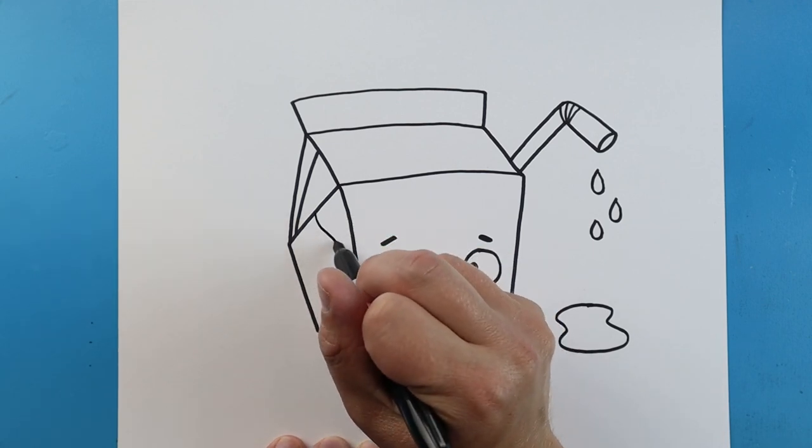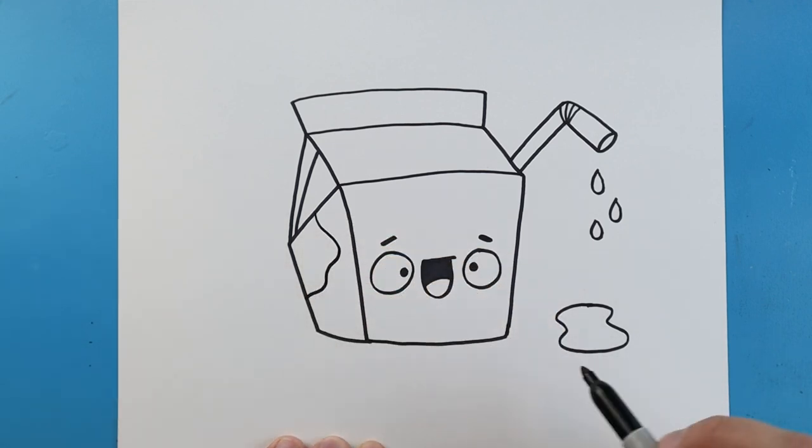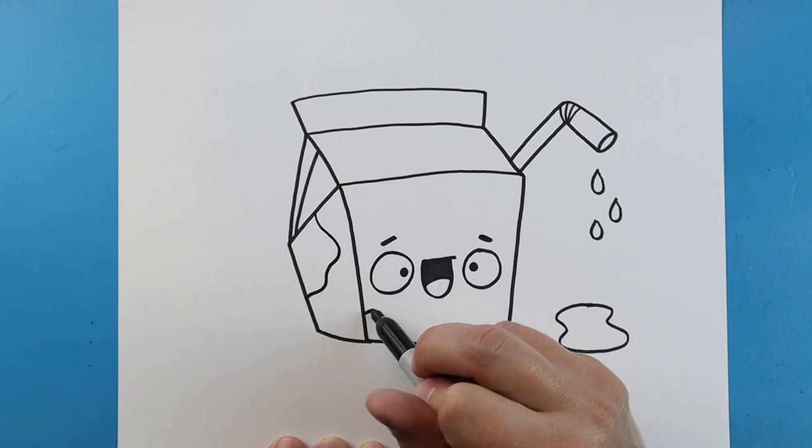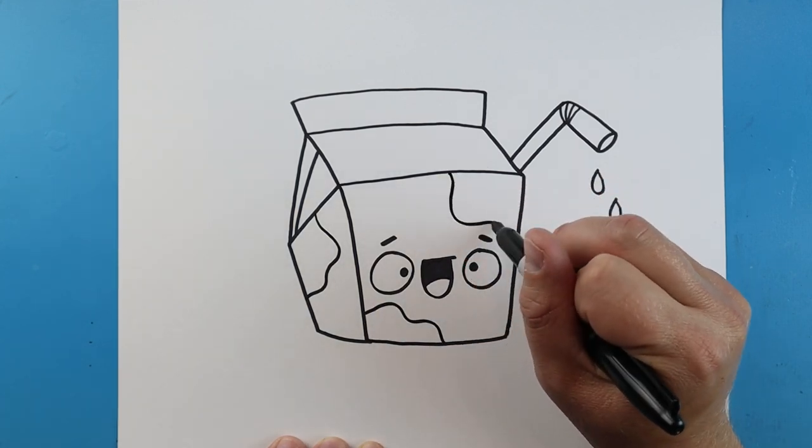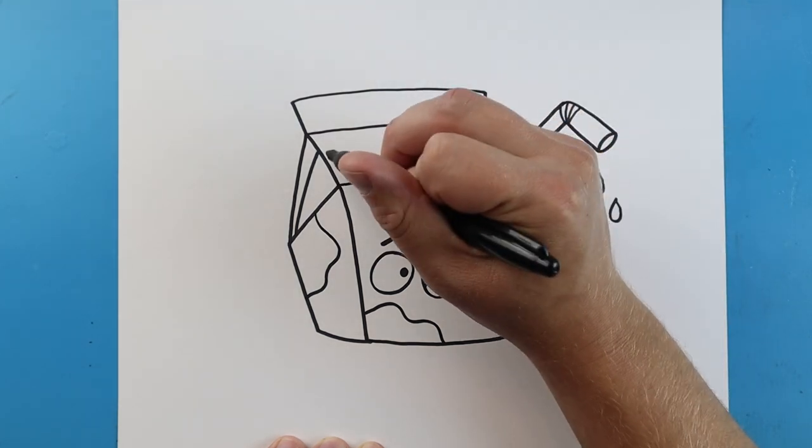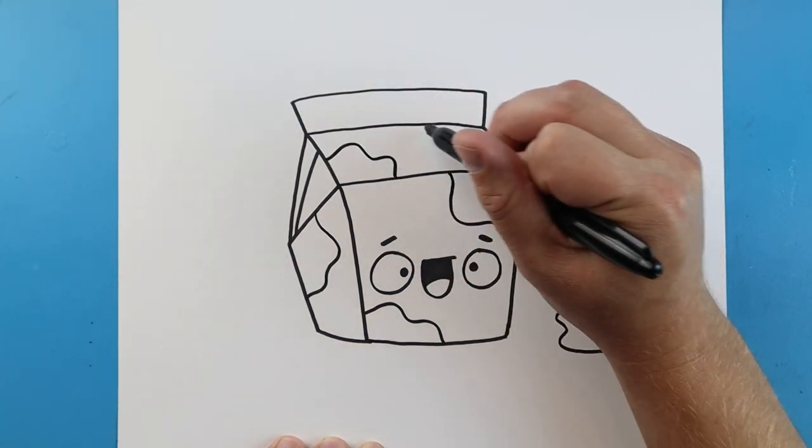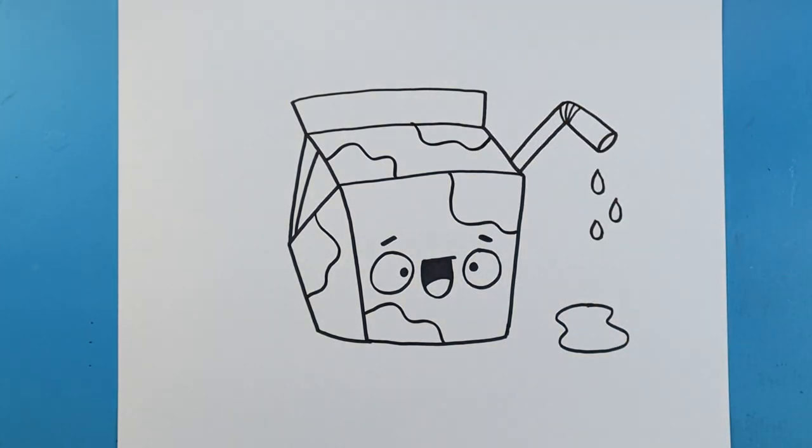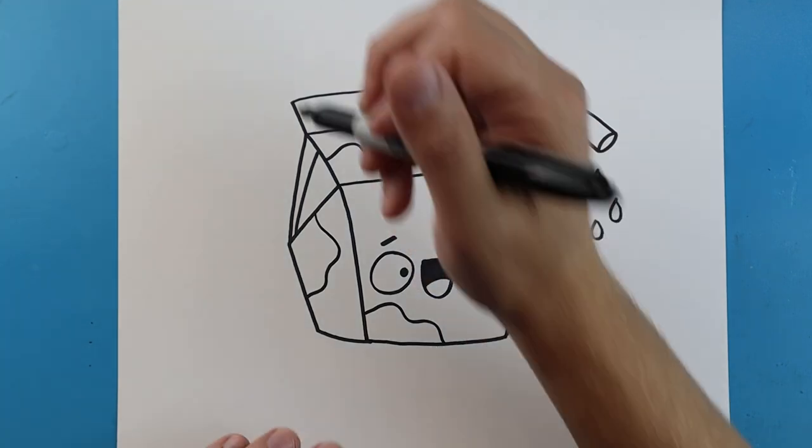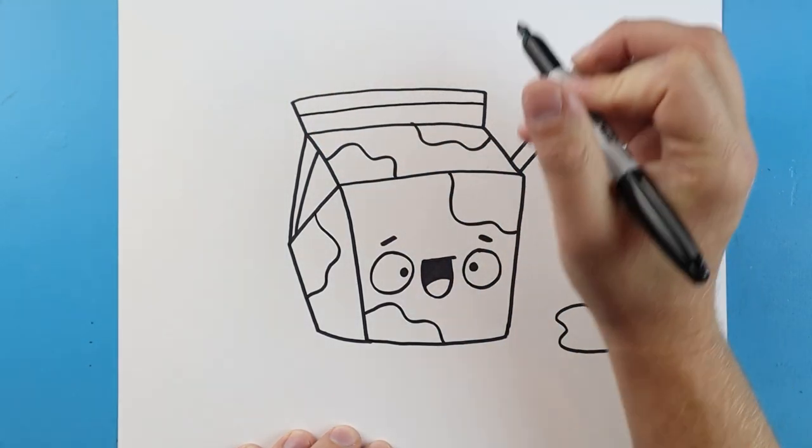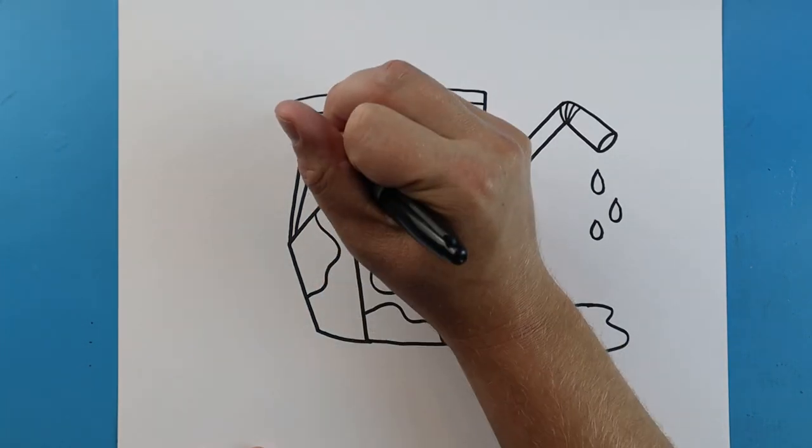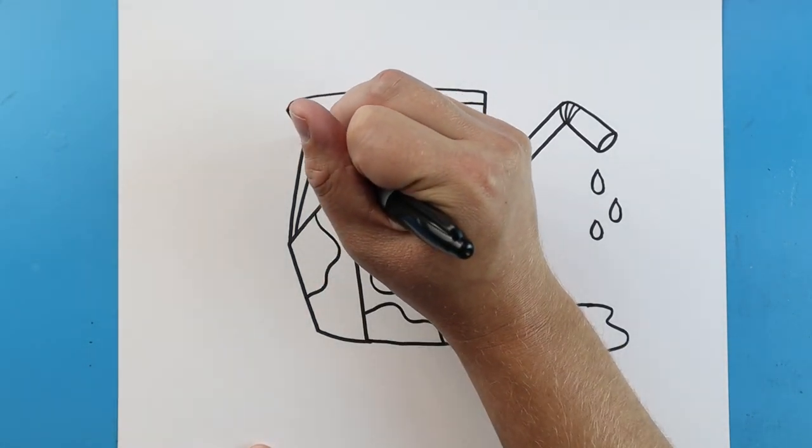Now on top, to finish this off, make some wavy lines for some spots on our carton of milk. Put some big wavy lines on here to make different spots, just to add a little bit of detail. I'm also going to draw a little line across the top here with a little line that goes down and then connects.